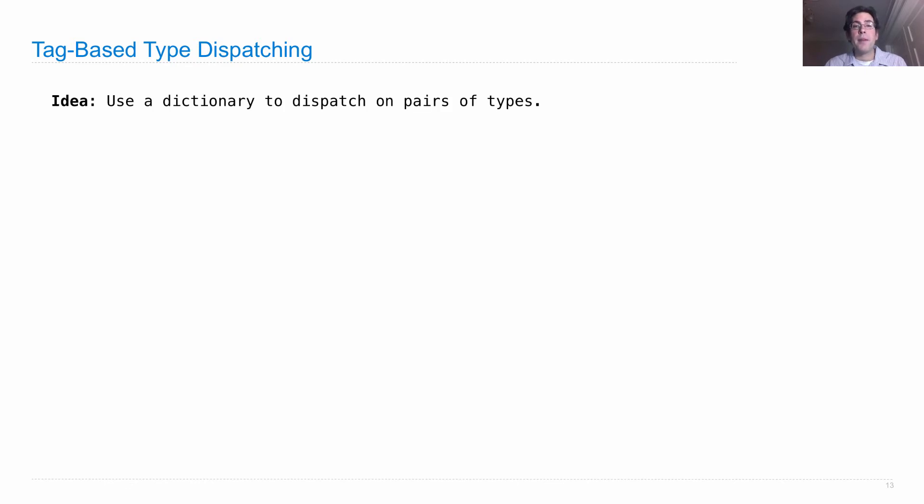So, we'll use a dictionary to dispatch on pairs of types. And that dictionary will hold pairs of types as the key. And then, as the value, will be the function that actually does the addition.